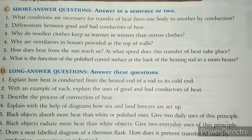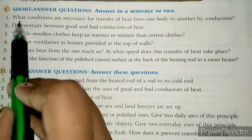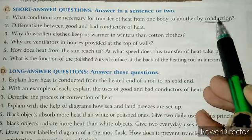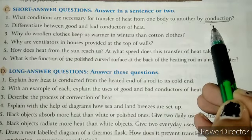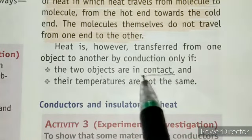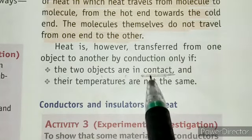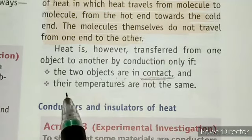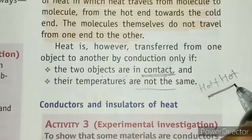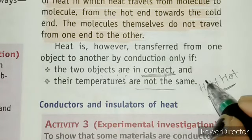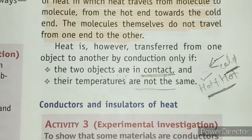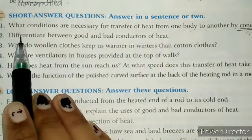Next we have short answer questions. The first question is: what conditions are necessary for transfer of heat from one body to another by conduction? The conditions are: first, the two objects must be in contact with each other. Second, their temperatures must not be the same — if one object is hot and another is cold, then conduction can take place.